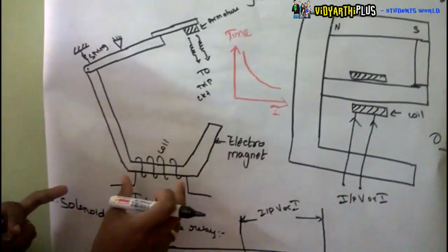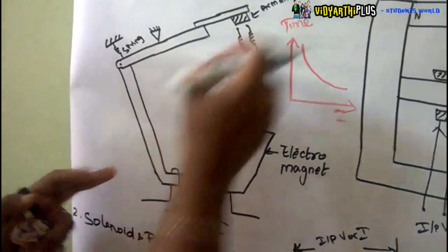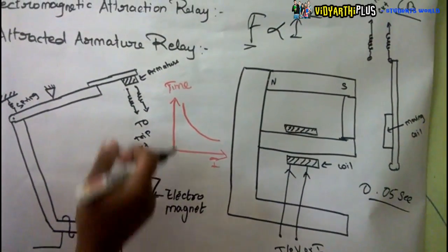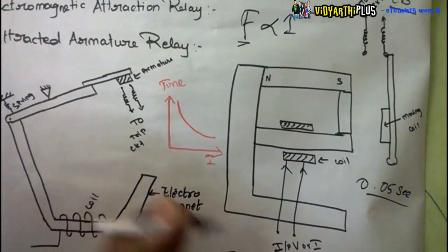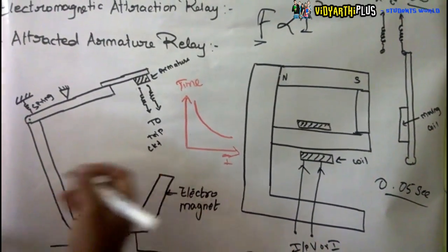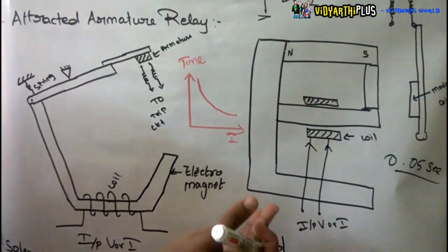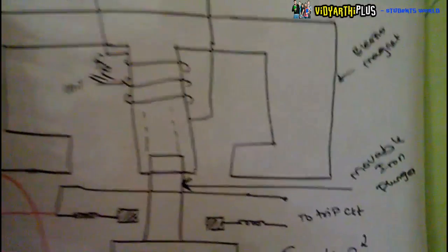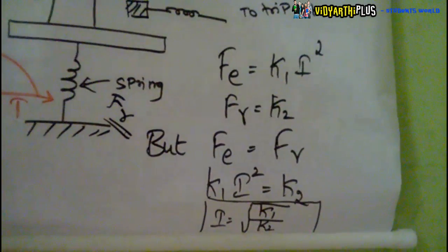During abnormal operation the current is high, so the electromagnetic force — being proportional to I² — becomes much larger than the restraining force. This immediately attracts the armature within a few microseconds and opens the circuit breaker very rapidly. The action must be very fast so that the faulty part is isolated from the healthy part quickly and the other parts are not affected by the overcurrent.